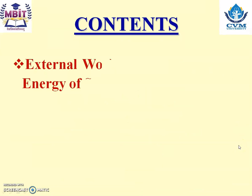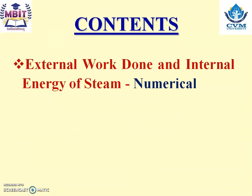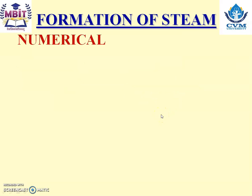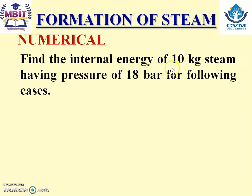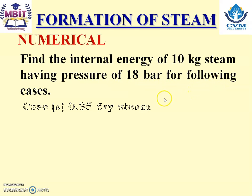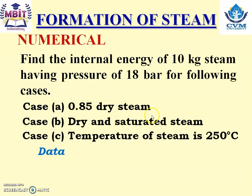The topic included in today's lecture is external work done and internal energy of steam, with a numerical example. Find the internal energy of 10 kilograms of steam at a pressure of 18 bar for the following cases: Case A is 0.85 dry (wet steam), Case B is dry and saturated steam.